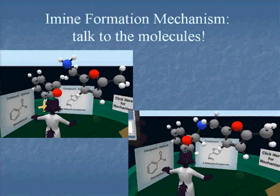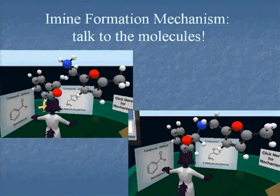You can also talk to molecules. This is an aldehyde and an amine. You tell them to react and they go through each intermediate to form the imine, and each intermediate has been minimized so it's realistic in its 3D shape.